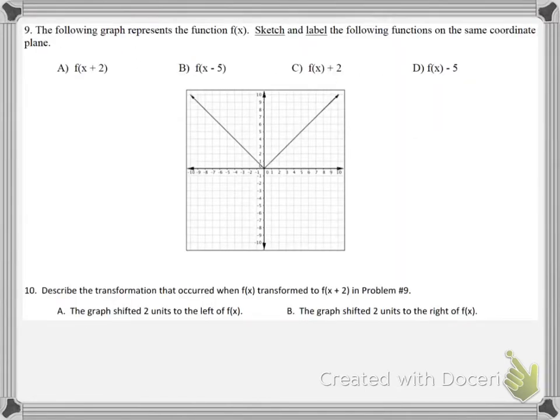Number 9: The following graph represents the function F of x. Sketch and label the following functions on the same coordinate plane. Choice A: F of x plus 2. You need to remember that when you add 2 on the inside of the parentheses, that is the backwards logic, the reverse logic. You are shifting to the left 2 units. So when you draw that to the left 2 units, the line would look like that in black.